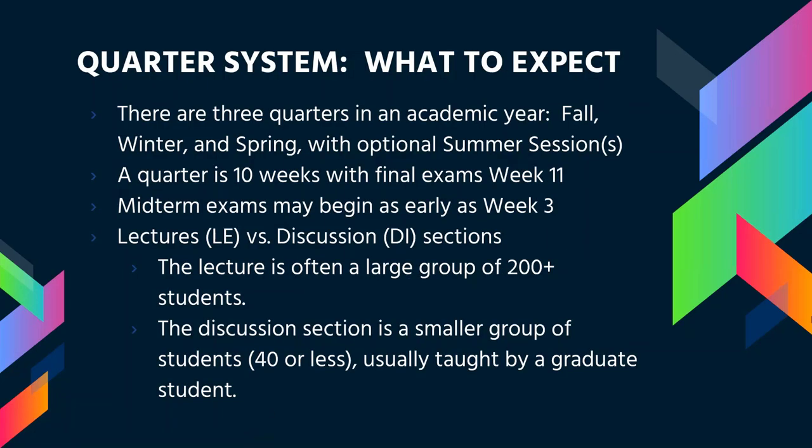Be aware that UCSD is on a quarter system and not a semester system. There are three quarters in an academic year: fall, winter, and spring. Summer session is an optional quarter. A quarter is 10 weeks in length and your final exams will occur in week 11. You can expect to have midterms as early as week 3 and as late as week 8.